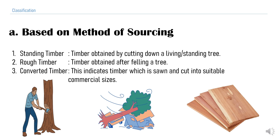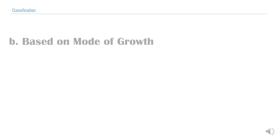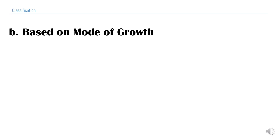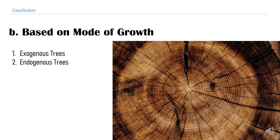The second classification is based on the mode of growth. Certain trees grow by width and certain grow by height. Based on that, we have exogenous trees and endogenous trees. Before explaining this classification, you need to know that in a timber cross-section, the centermost portion is called the pith, and all those concentric circles around the pith are called annular rings. These two important terms are essential for understanding this classification. A detailed video will be made about the structure of timber in the next part.